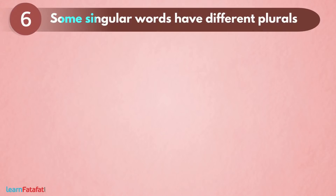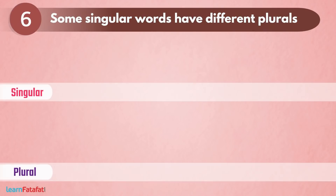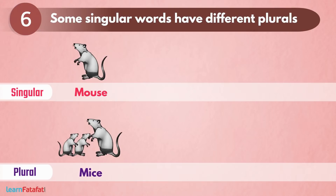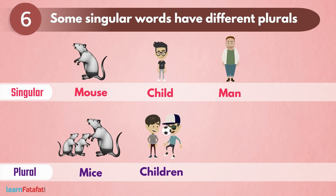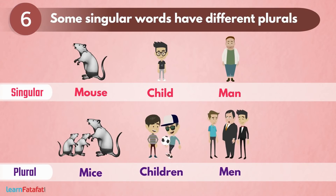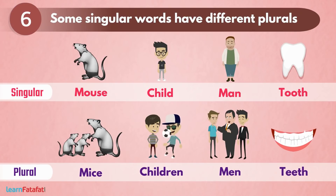Some singular words have different plurals. कुछ word जैसे mouse → mice, child → children, man → men, tooth → teeth — इनमें singular और plural अलग ही होते हैं।